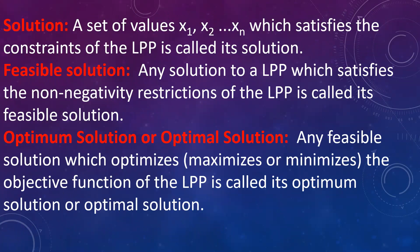Now let us see the definitions of all the concepts. First, solution: a set of values X1, X2, ..., Xn which satisfies the constraints of linear programming is called the solution. There can be any number of values of X that satisfy all the constraints. From these solutions, the values which satisfy the non-negative restrictions are called the feasible solution. And the optimum solution is from the set of feasible solutions — the values which optimize the objective function. So: solution satisfies constraints; feasible solution satisfies non-negativity restriction; and feasible solution which optimizes the objective function is the optimal solution.